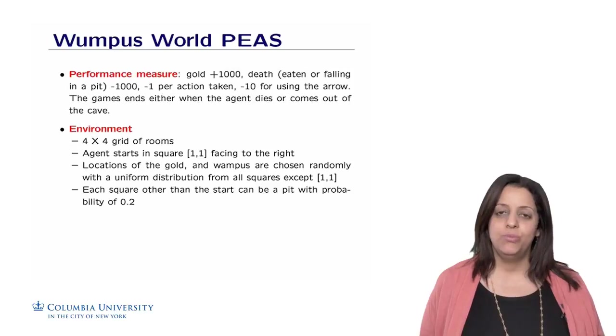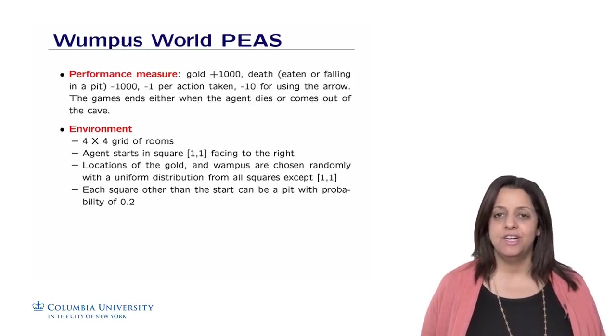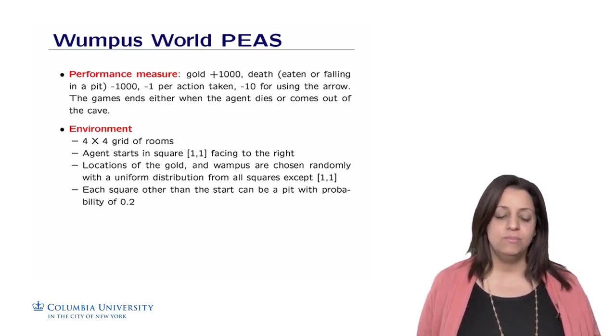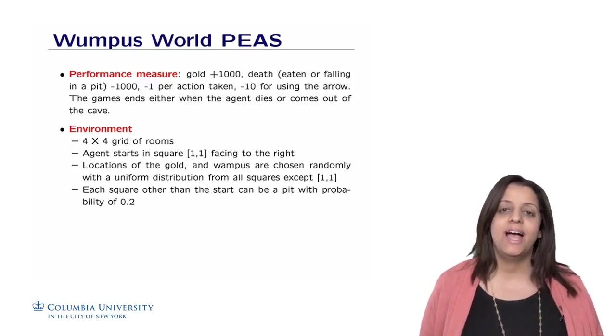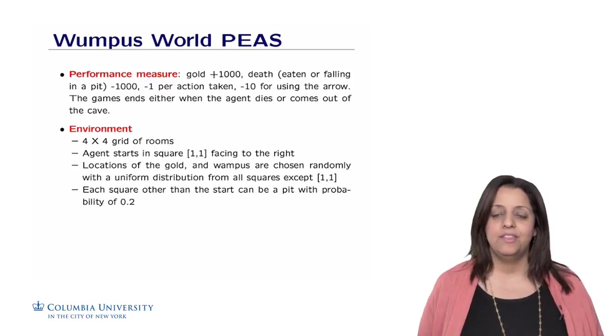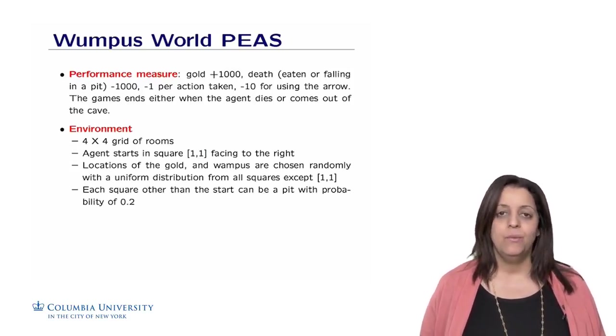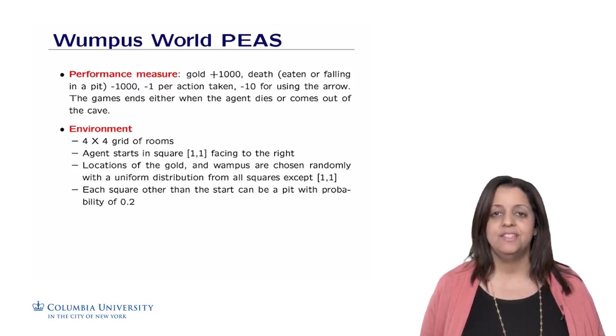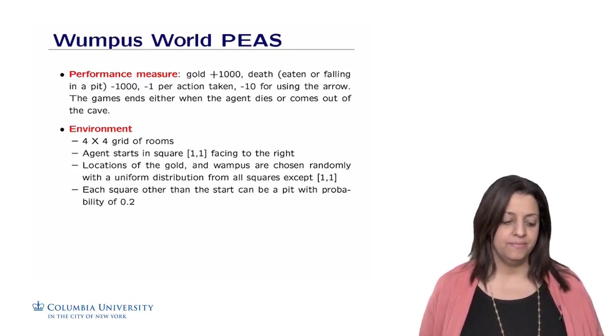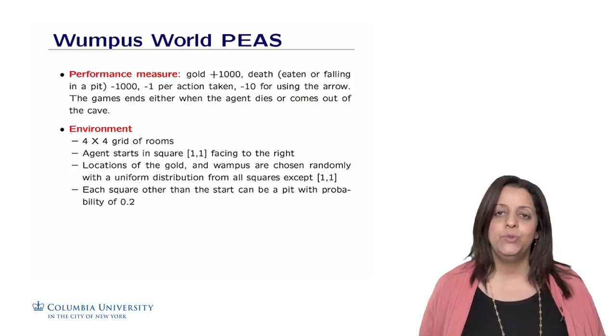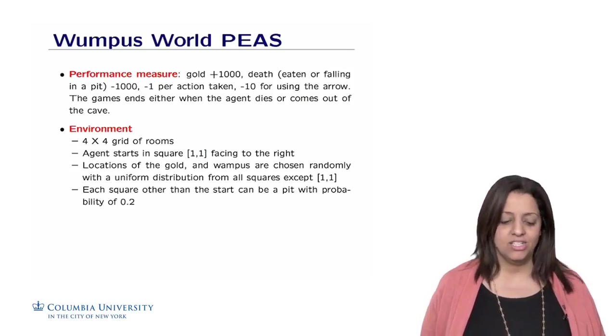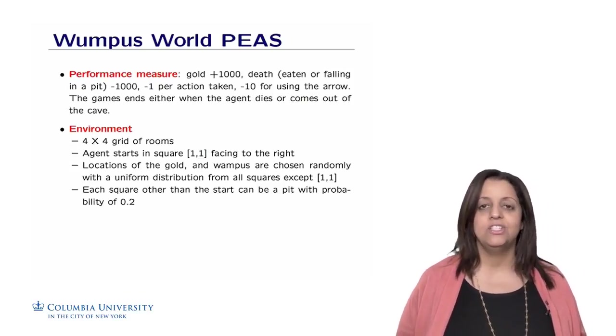Let's now define the Wumpus world in terms of the PEAS environment criteria. PEAS stands for performance, environment, actions, and sensors. For the performance measure, we are going to add 1,000 points if the agent gets the gold. We subtract 1,000 points if it is eaten or falls in a pit. We subtract 1 point whenever the agent makes an action, and minus 10 if the agent uses the arrow.